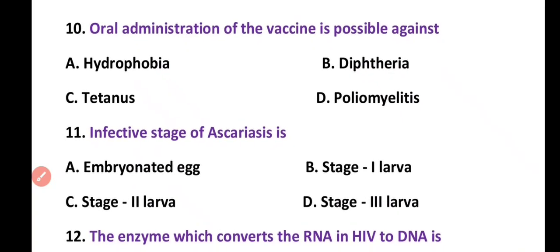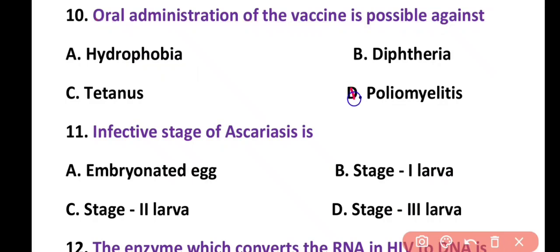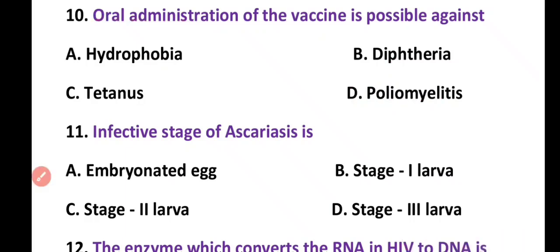Question 10. Oral administration of the vaccine is possible against: hydrophobia, diphtheria, tetanus, or poliomyelitis. Correct answer is option D. Against poliomyelitis, oral vaccine is given to children.